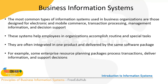Business information systems are the most common type used by organizations — designed for electronic and mobile commerce, transaction processing, management information systems, and decision support systems. These systems help employees and organizations accomplish routine and specific tasks, and are often integrated in one product such as enterprise resource planning (ERP) systems packages, which process transactions, deliver information, and support decisions.